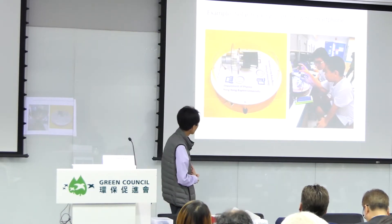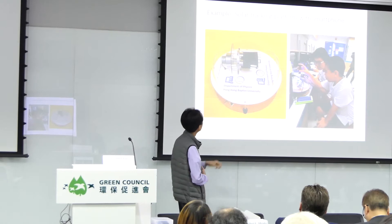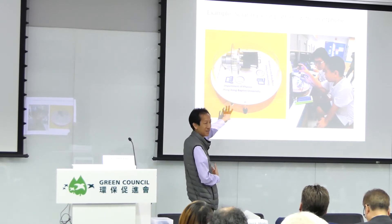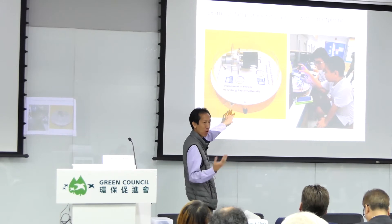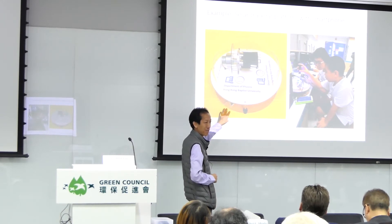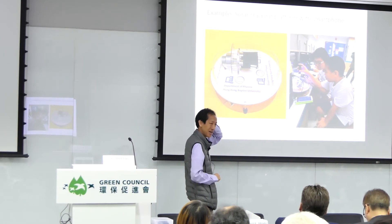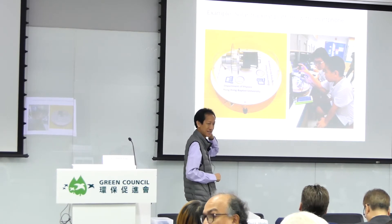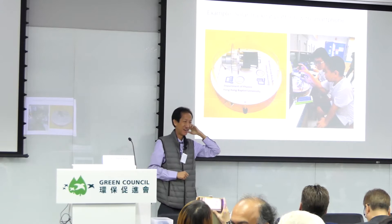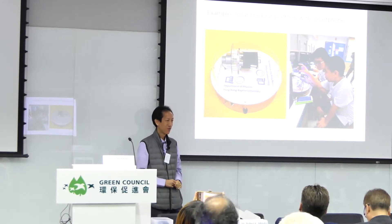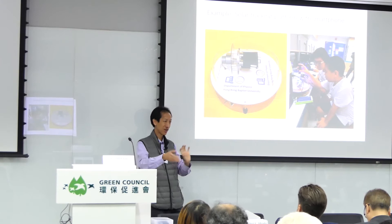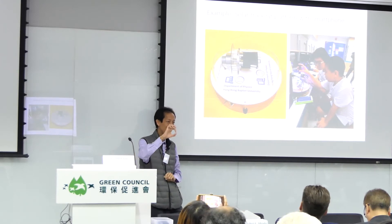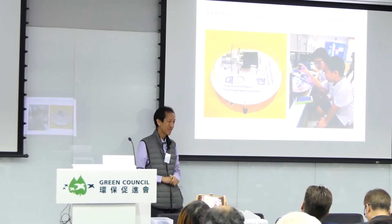Another example is the solar tracker. Normally we can get about 20% more energy daily with a solar tracker. But in my experience, it's quite difficult in the sense that we need to have maintenance of the solar tracking — usually the motor is the issue.